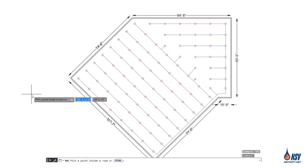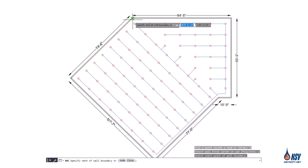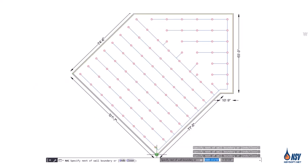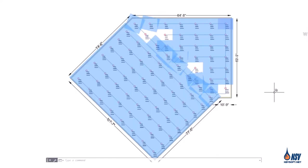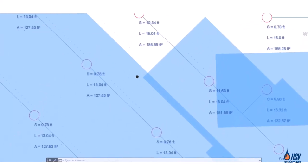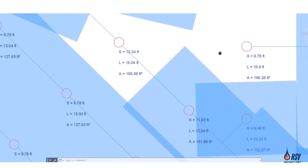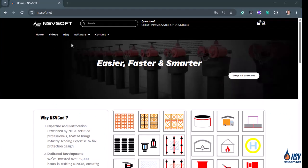After running the FindACA app, the software calculates the S, L, and the coverage area of the sprinklers. If any of these values exceed the predefined thresholds, the app doesn't show the coverage of non-compliant sprinklers for easy identification. You can download this software from nsvsoft.net.